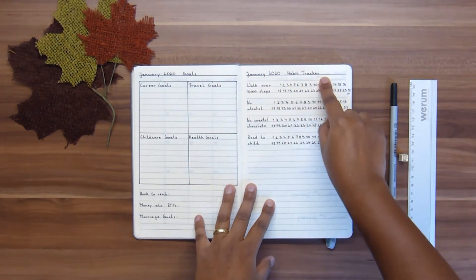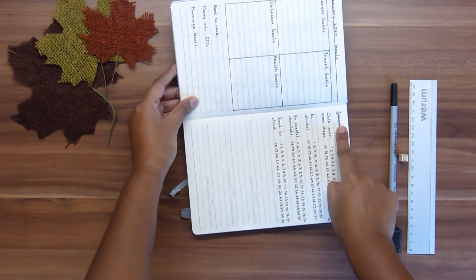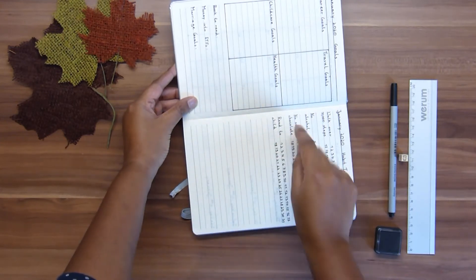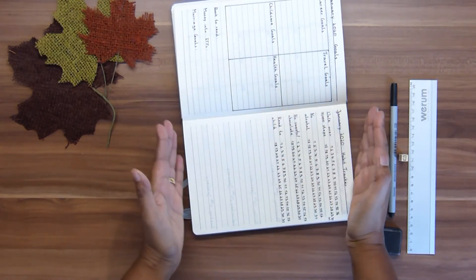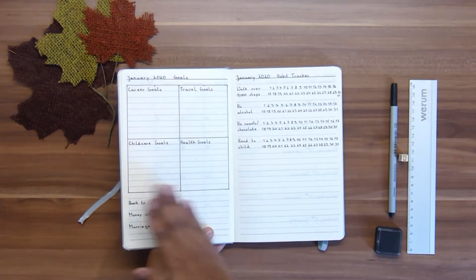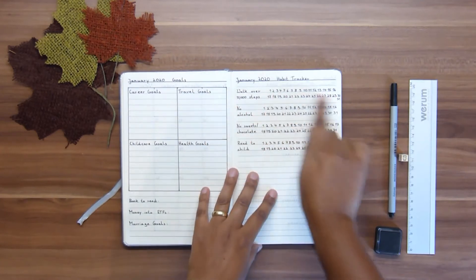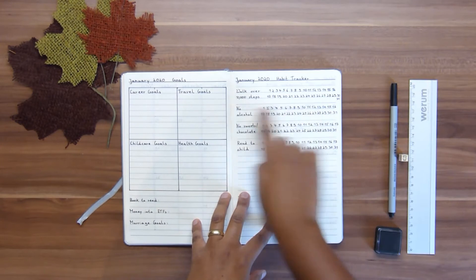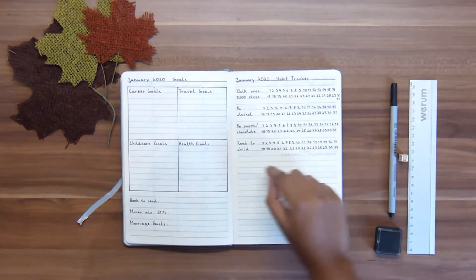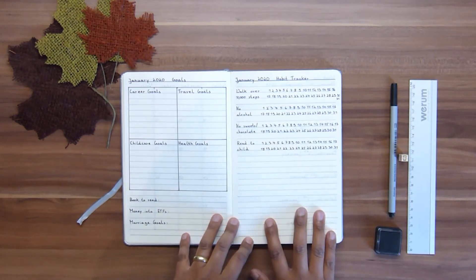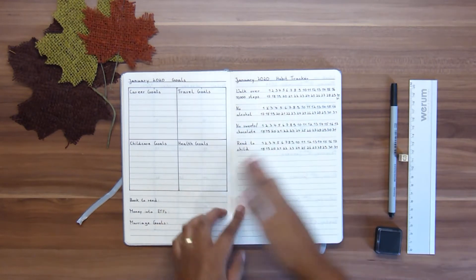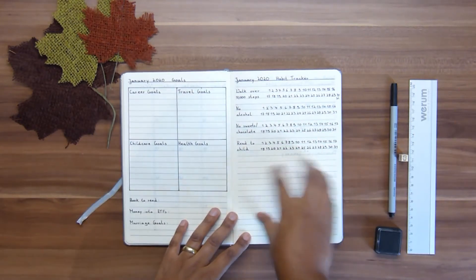Then I have my habit tracker. This notebook doesn't have 31 lines, so I couldn't do 31 columns and put the habit here and cross it off. I didn't want to do this in a different way than the layout of all the other pages, so I decided to do it like this. I've put the numbers of the days from 1 to 31, and I have four habits here that I want to track each month. I can put five more habits in each month that I want to track and incorporate in my life.